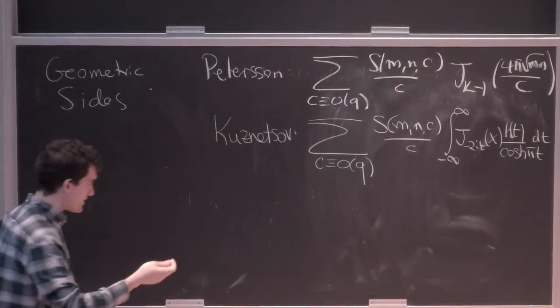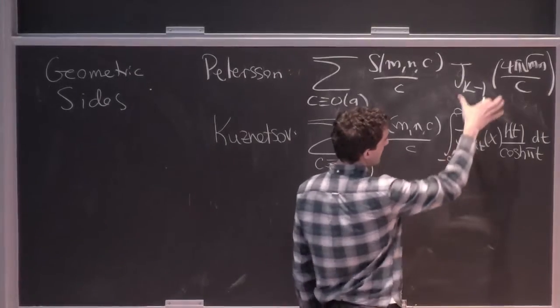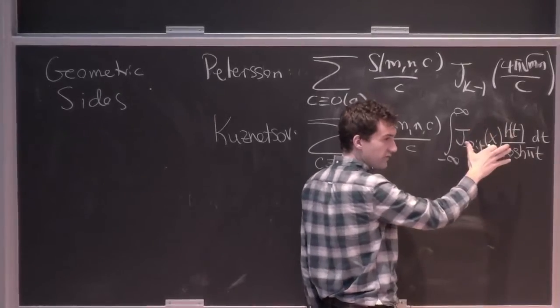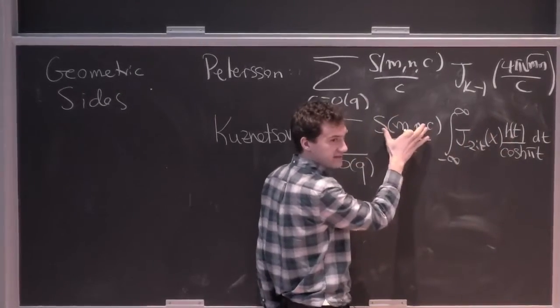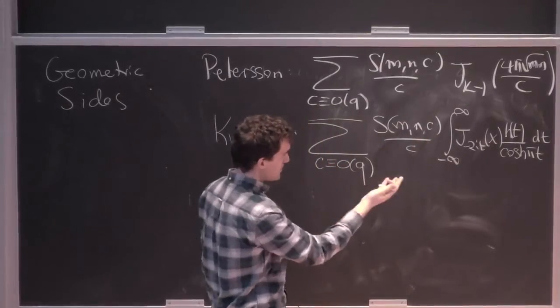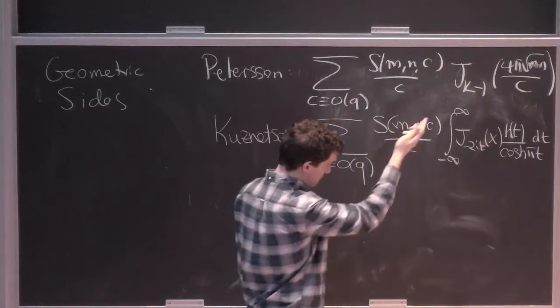And I made a remark at the end of the lecture last time that what we'd really want is not this Bessel function or this integral transform of h, but an arbitrary function here so that we can control exactly the range of summation over the modulus of this Kloosterman sum. So neither of these formulas alone is sufficient to do that.